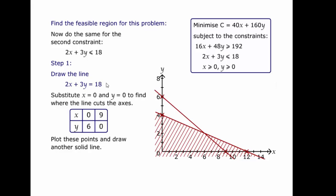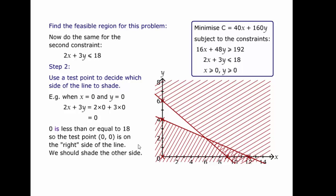And then for the region, again, use the origin. Well, this time, 0 plus 0 is less than or equal to 18. So the origin will be in the part we want. So that means we shade above. We shade the bit we don't want above. Like so.